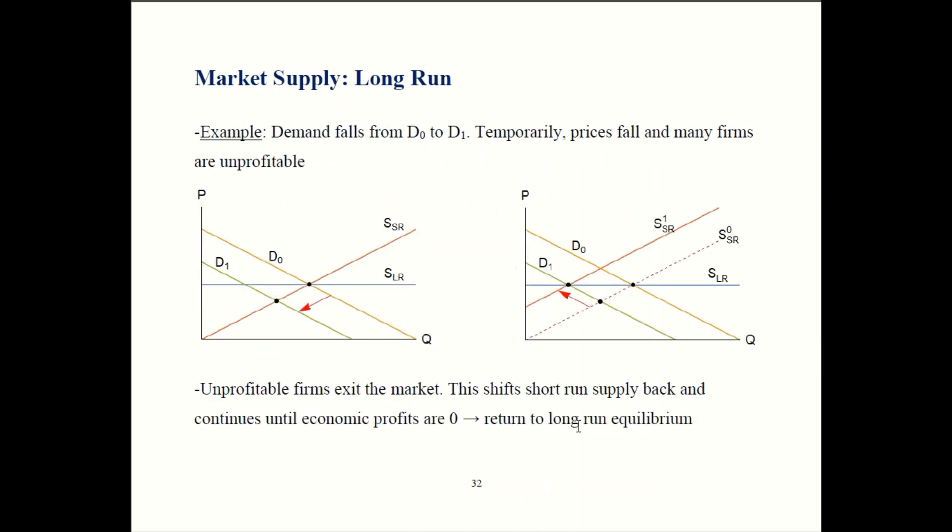So eventually enough firms are going to leave the market and when firms leave the market that's going to shift the supply curve back. So supply shifts from S0 to S1 and once enough firms leave the market now we're back on our long run supply curve and we're back to zero profits. So that's how the market adjusts. So first demand can go up or go down and then in response firms can either enter or leave the market and that'll continue until they get back to this long run equilibrium.